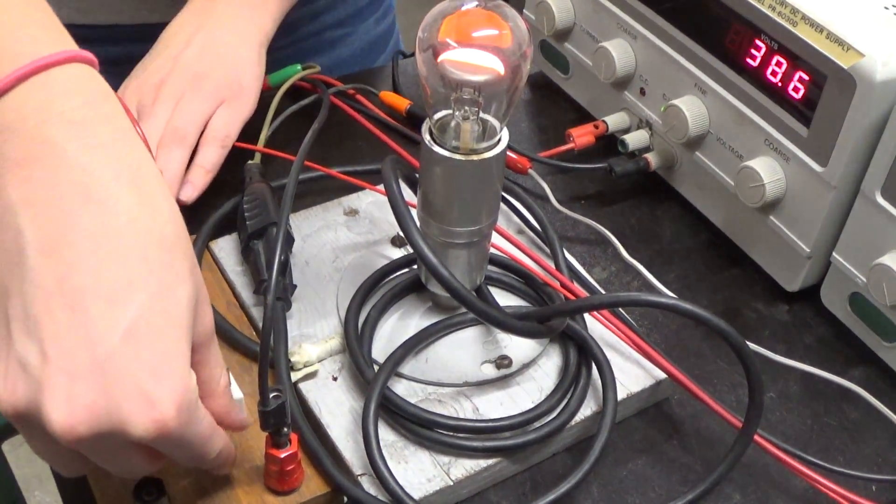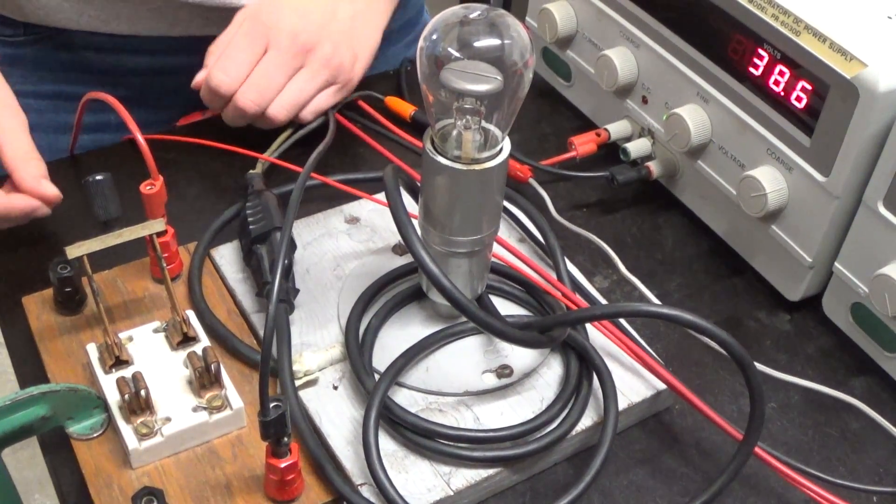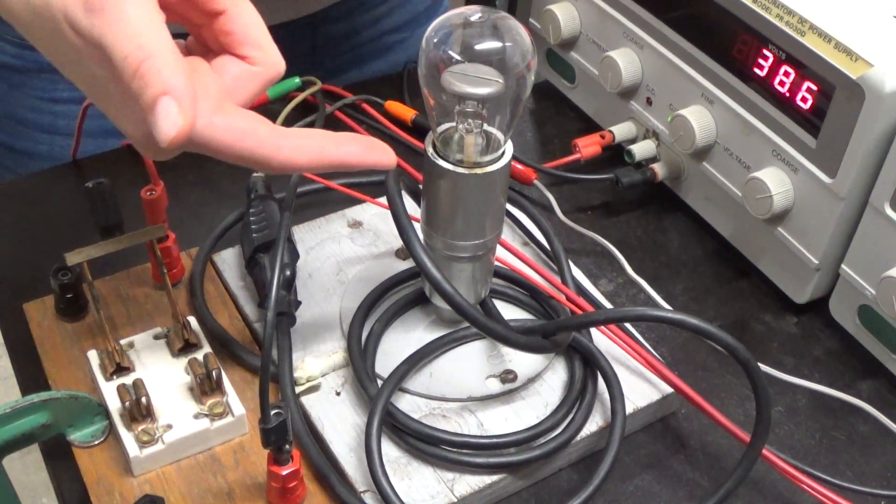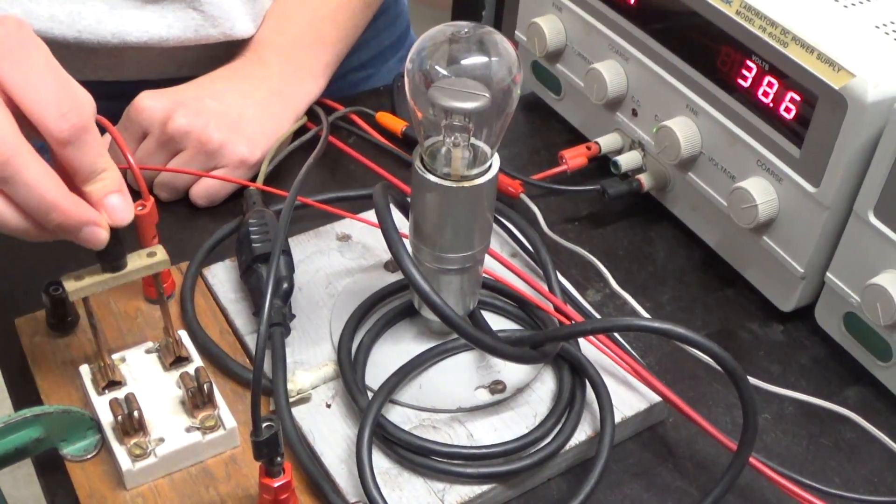So current is flowing in one direction, we open the switch, very briefly, you see current flowing in the opposite direction, indicated by the brief light in the other half of the light bulb.